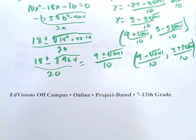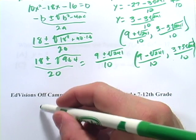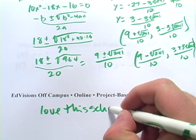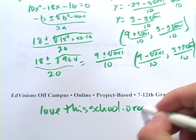My name is Larry. I'm a teacher at EdVisions Off Campus. It's an online project-based school in Minnesota. If you're interested, you can find us on the web at lovethisschool.org. Thanks.